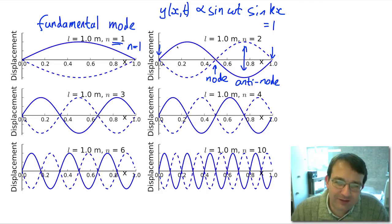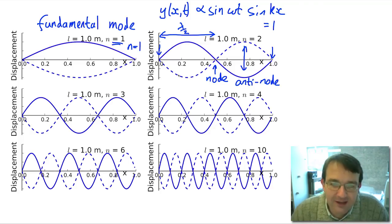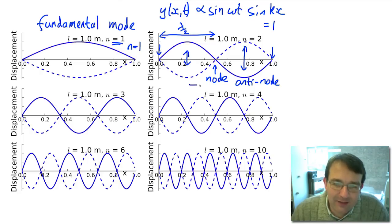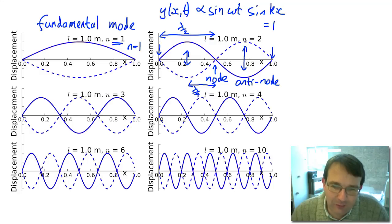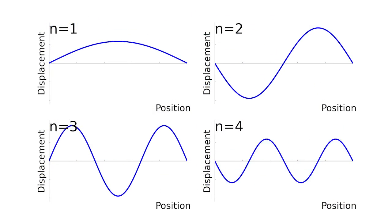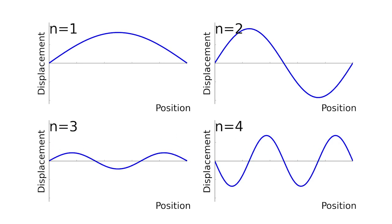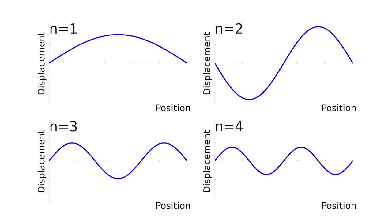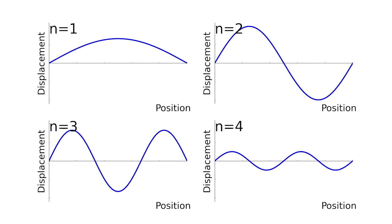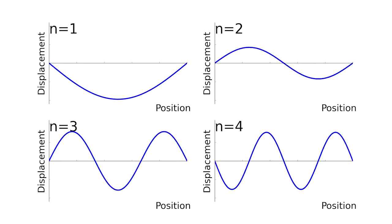As we look at the displacement at one instant in time, the displacement between two adjacent nodes is equal to half a wavelength, and we have an anti-node exactly halfway in between. So the displacement between a node and an anti-node is a quarter of a wavelength. Now that we've seen the static picture and introduced the vocabulary to describe it, let's have a look at an animation of a standing wave on a string. Here you can see the first four modes of vibration for a string of fixed length.